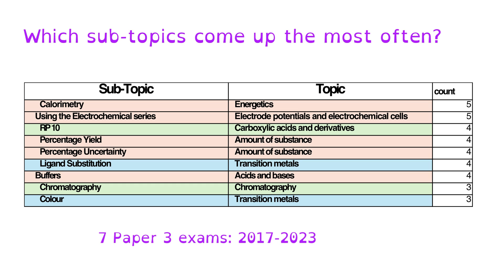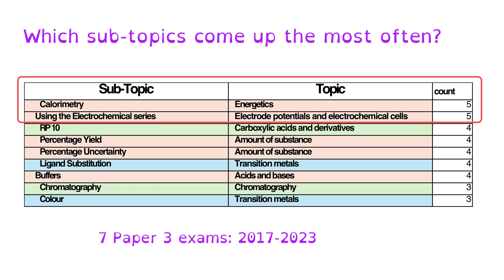There are some subtopics assessed more frequently than others. Across the seven paper three exams between 2017 and 2023, calorimetry and electrochemical series have been assessed five times out of seven. Five subtopics have been assessed four times: required practical 10, two amounts of substance subtopics — percentage yield and percentage uncertainty — and then transition metals ligand substitution and buffers from the acids and bases topic. Chromatography and colour come up three times out of seven.